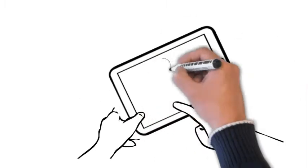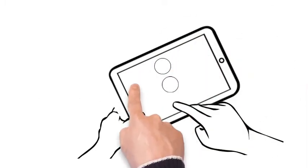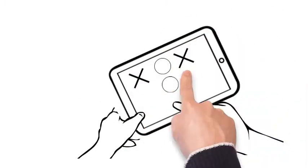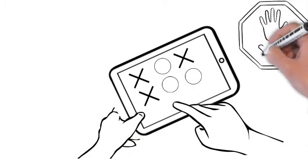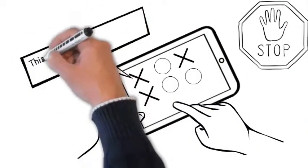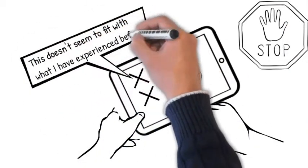Experts will rely on System 1 thinking until a situation does not fit a script or pattern. In other words, they notice that something is different. This noticing should shift them into System 2 thinking, where they slow down, reflect on what is different, and gather more information.